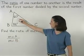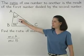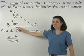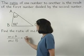And since the measure of angle A is 60 degrees and the measure of angle B is 80 degrees, we have 60 over 80.